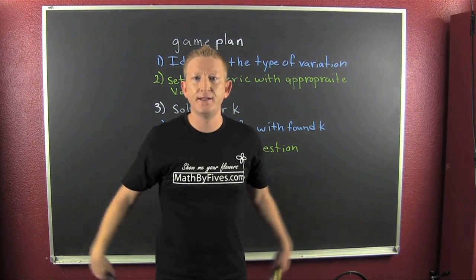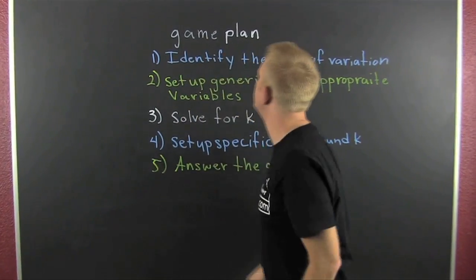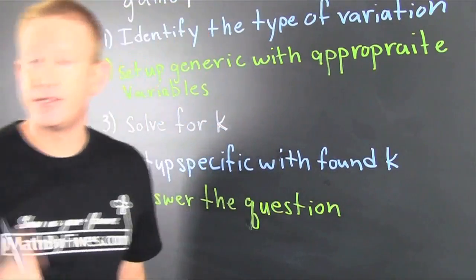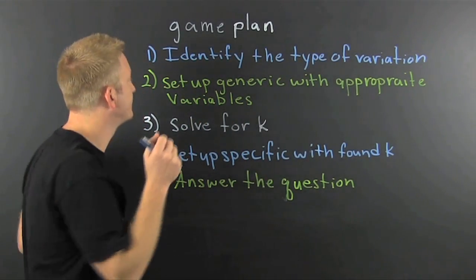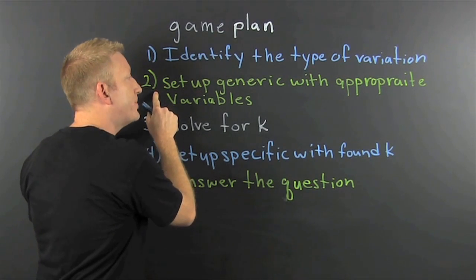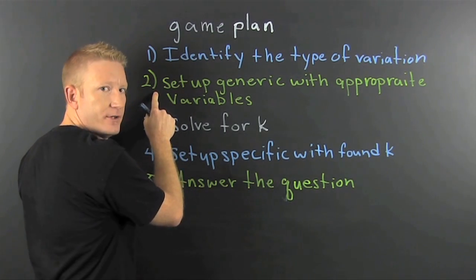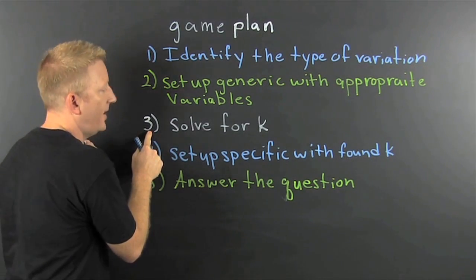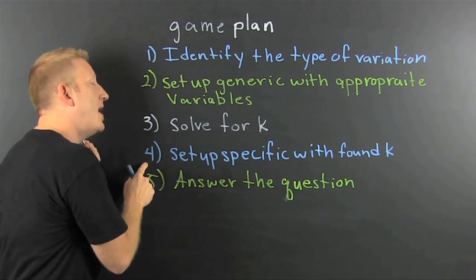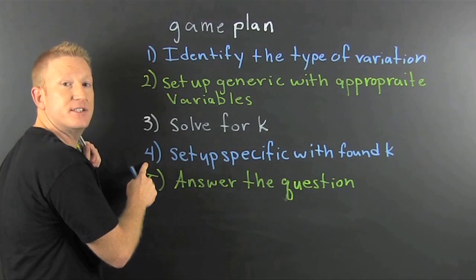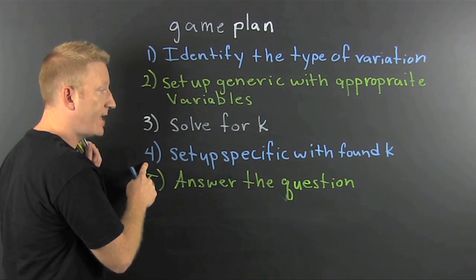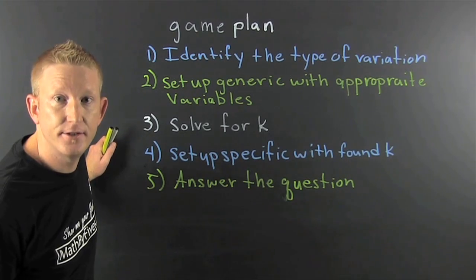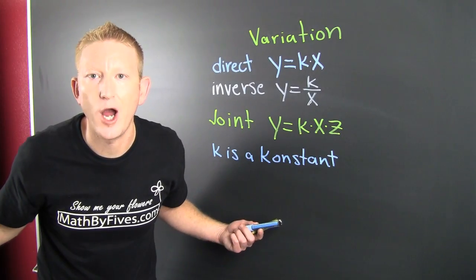We have a game plan. First, we're gonna identify the type of variation. Then we're gonna set up the generic with appropriate variables. Then we're gonna solve for k. Then we're gonna set up the specific with our found k. And then finally, you answer the question.